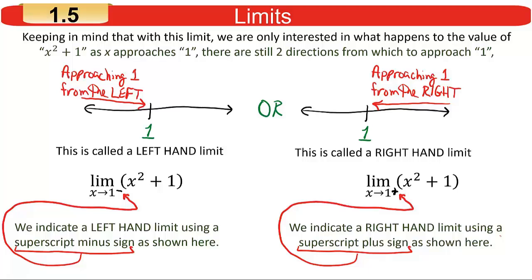On the other hand, if we're coming from the right, we use a superscript plus. So the minus doesn't mean a negative number — I would just think of it as a minus sign meaning coming from the left. And the plus sign doesn't necessarily mean positive; it simply means coming from the right.